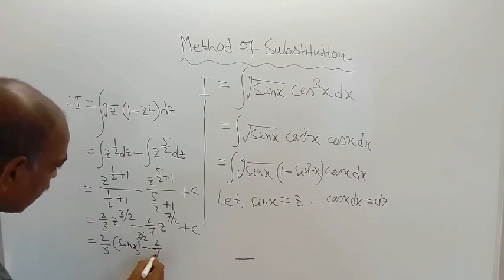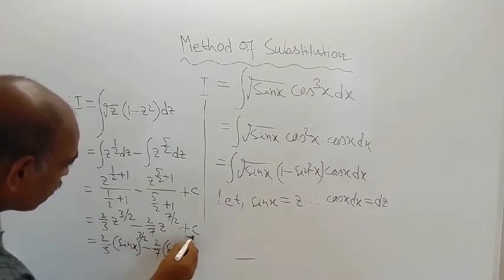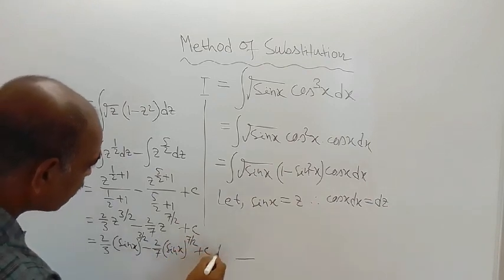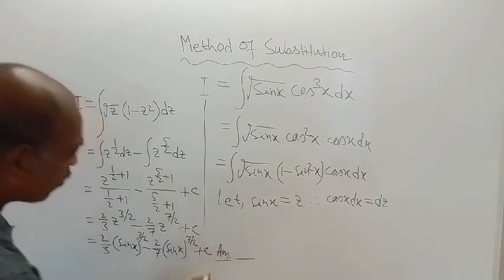minus 2 by 7, sin x to the power 7 by 2, plus c. So this is the answer to the given problem.